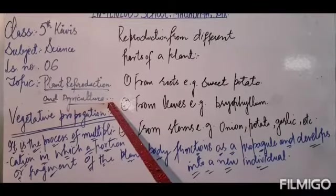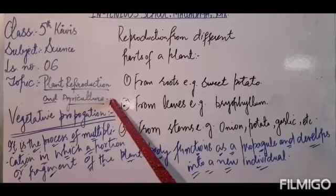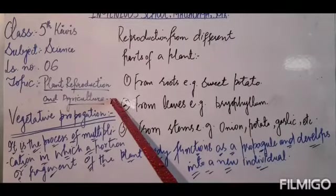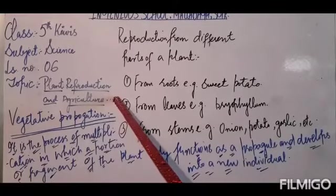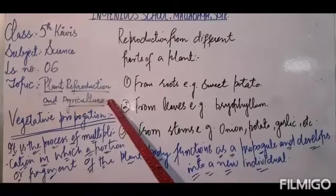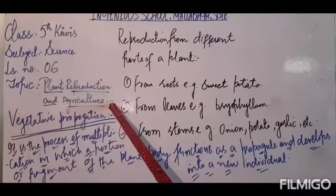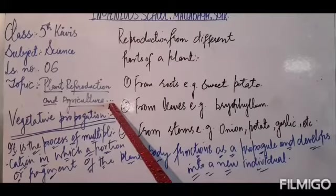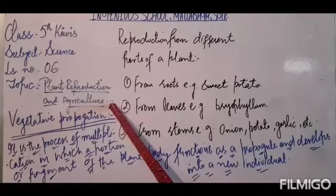We also learned about the different ways and methods of seed dispersal. Today we are going to learn how a new individual plant grows from the different parts of a plant — how a new plant is produced from different parts of the parent plant, like from a root, from a stem, or from a leaf.